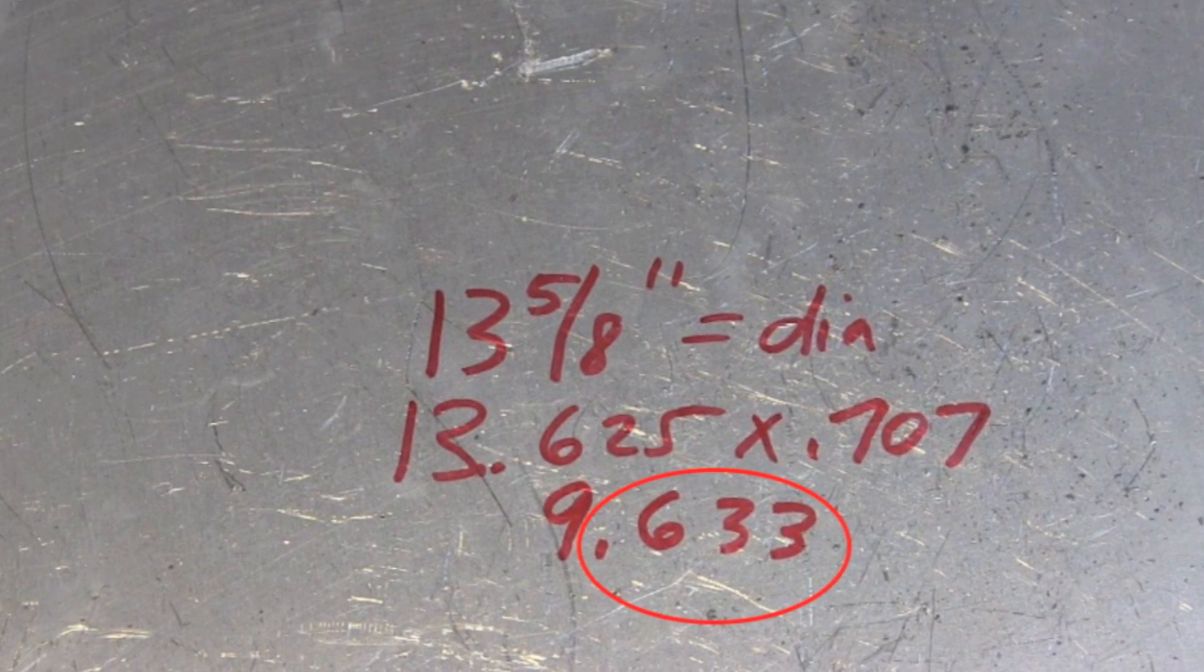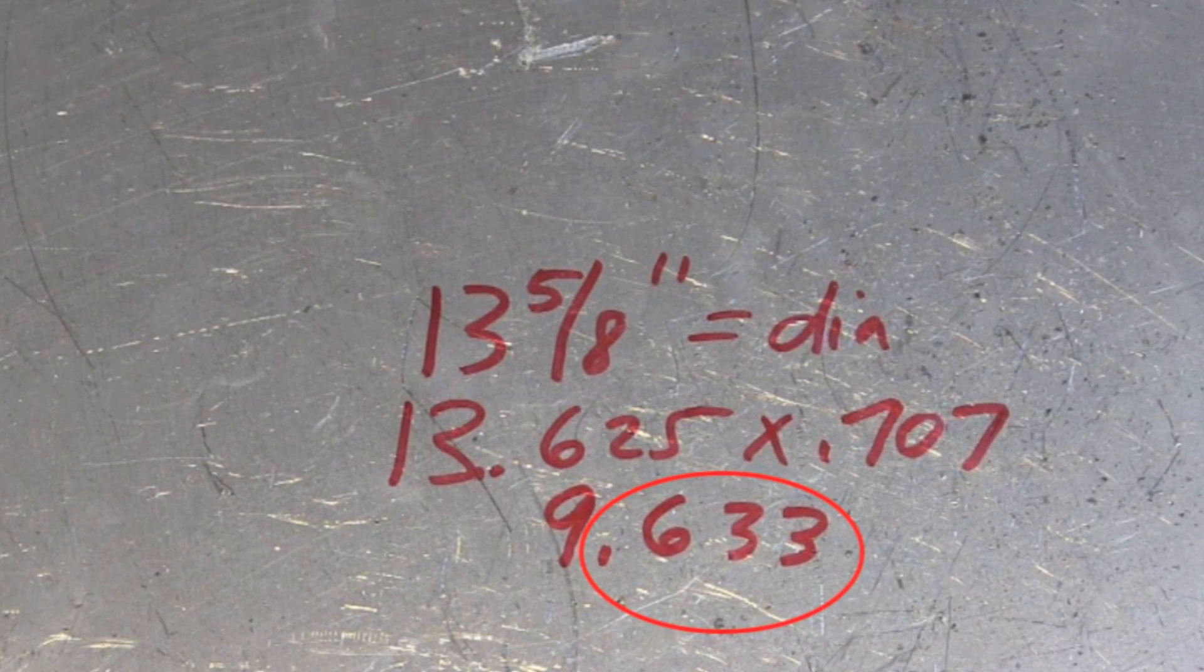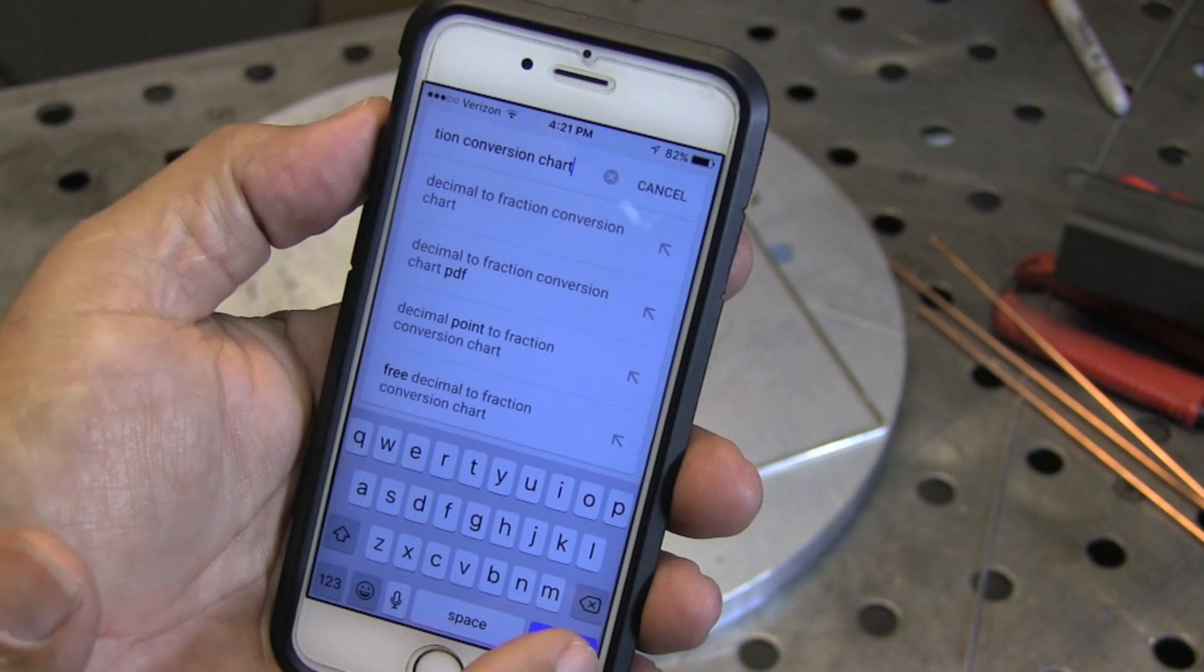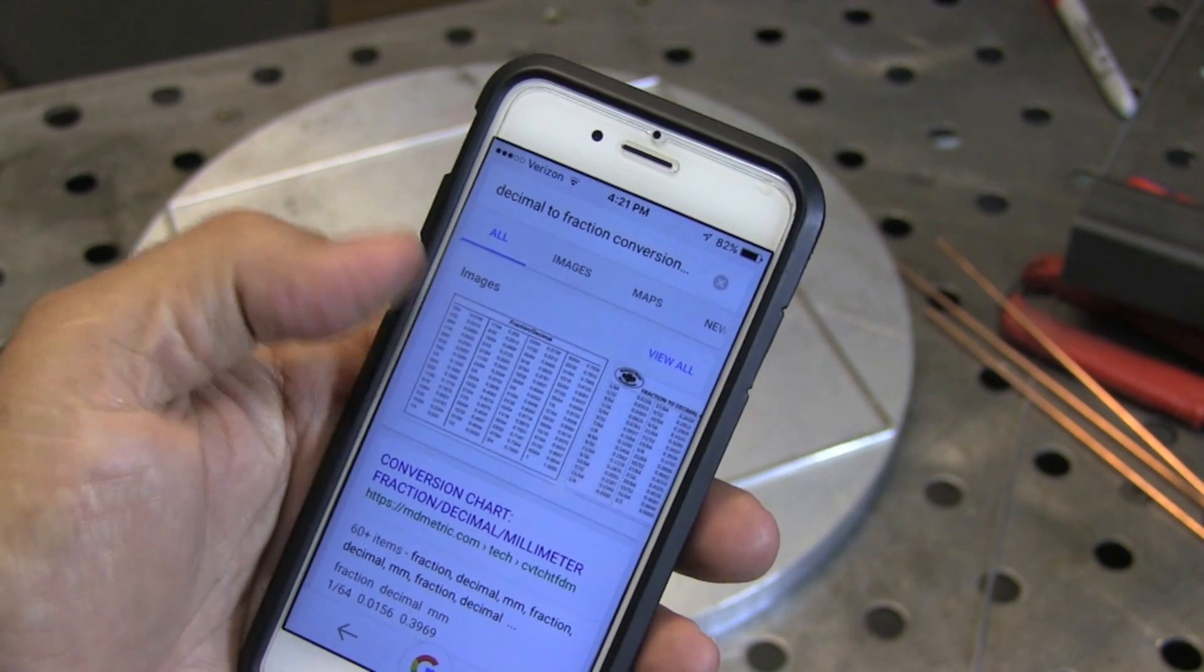Now if that were the actual dimension I was dealing with for a part, I could just get a machinist steel scale broken down into hundredths and make my mark and be done. But I've got to convert it back over to use with a tape measure that's broken down into 32nds and 64ths and whatnot.